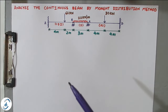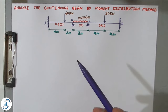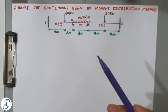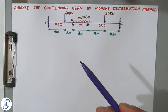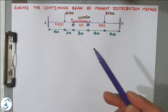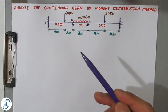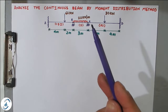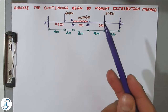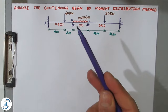Remember that the I value is different for all spans: AB has 1.5I, BC has 1I, and CD has 2I. The Moment Distribution Method is very simple. The first step is to find out fixed end moments, which we have already seen in the Slope Deflection Method. The second step is to calculate distribution factors. The third step is the moment distribution table itself, where we arrive at the final moments. The last step is to draw the bending moment diagram.